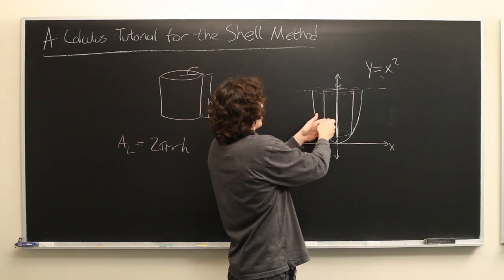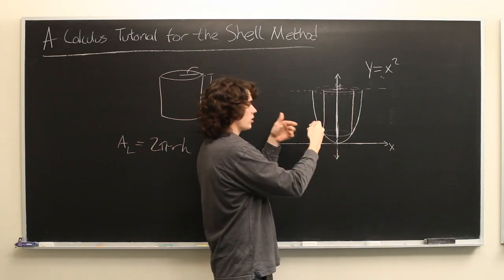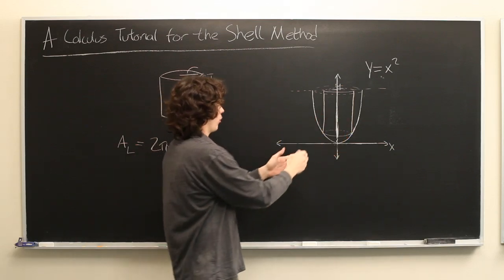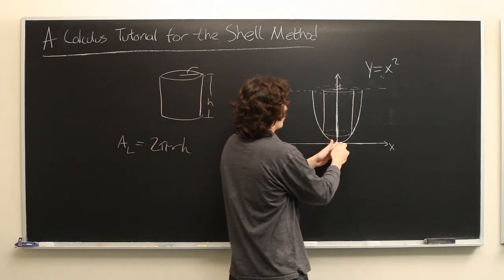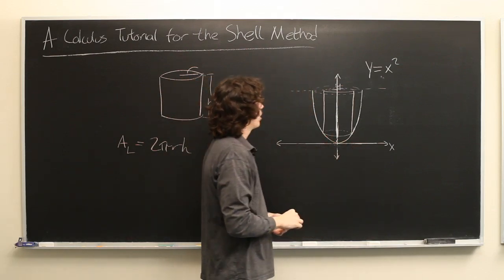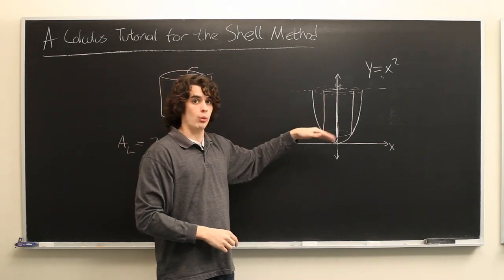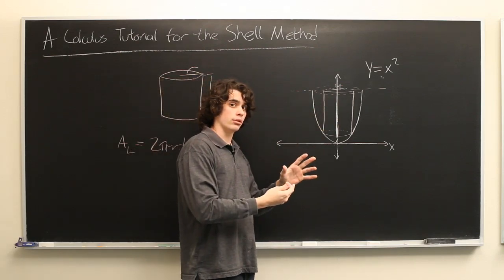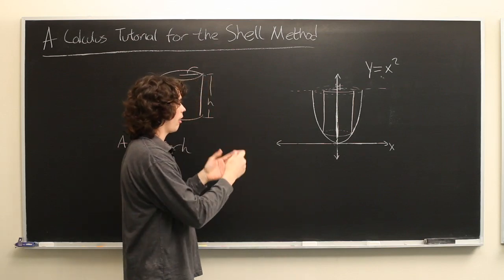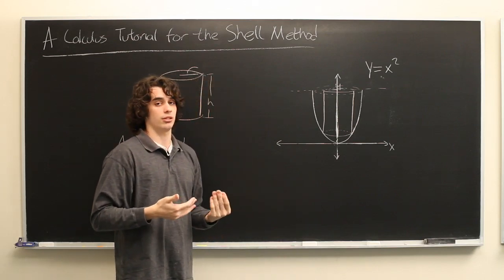If we were to take infinitely many of these cylindrical shells for every single point from 0 to 2, and if we found the lateral area of every one of those, we would be able to combine those to create the volume of the object. This is essentially the shell method.